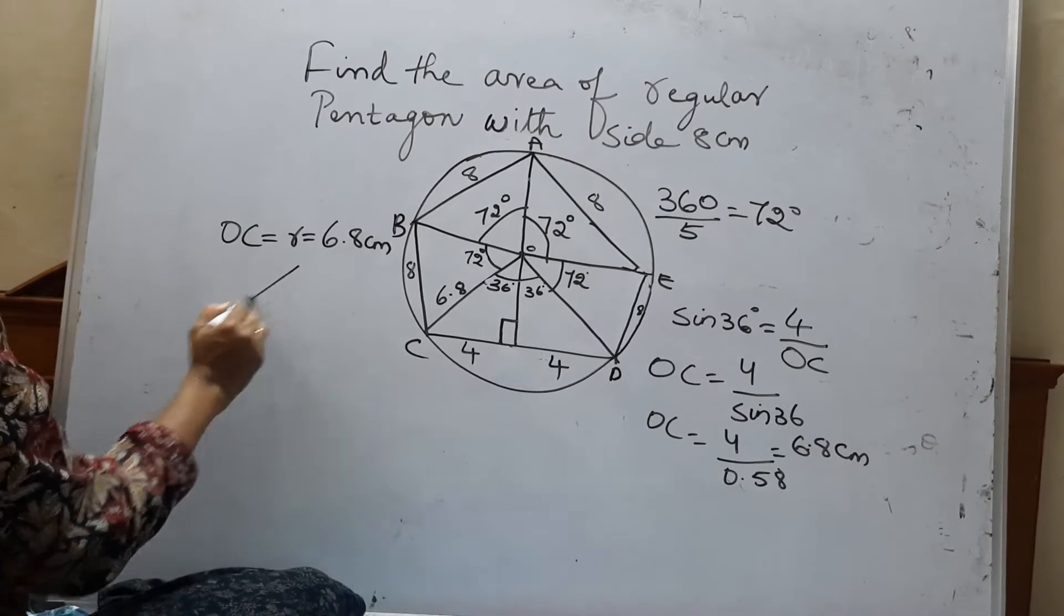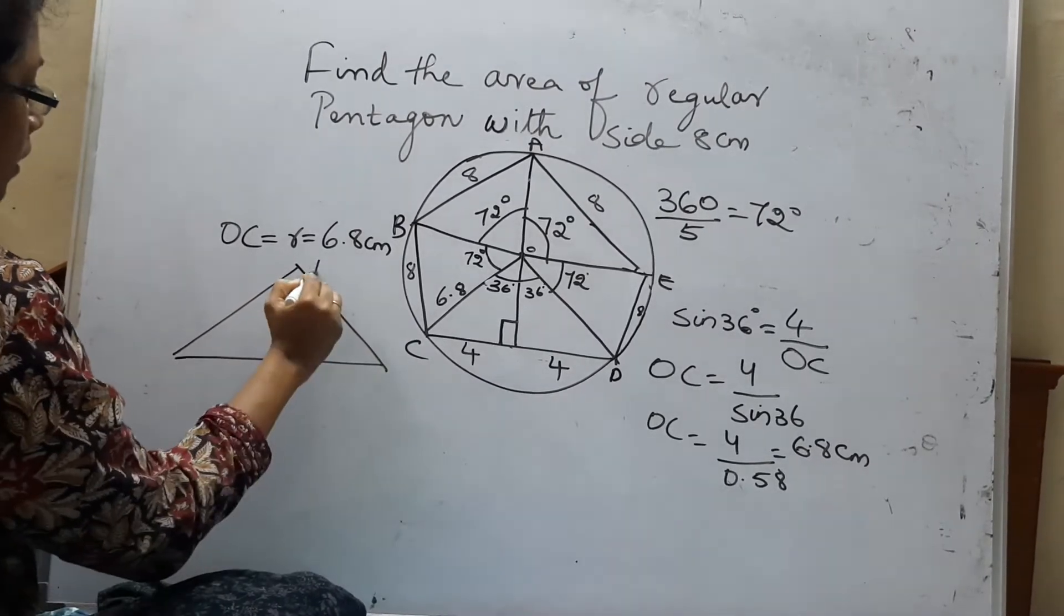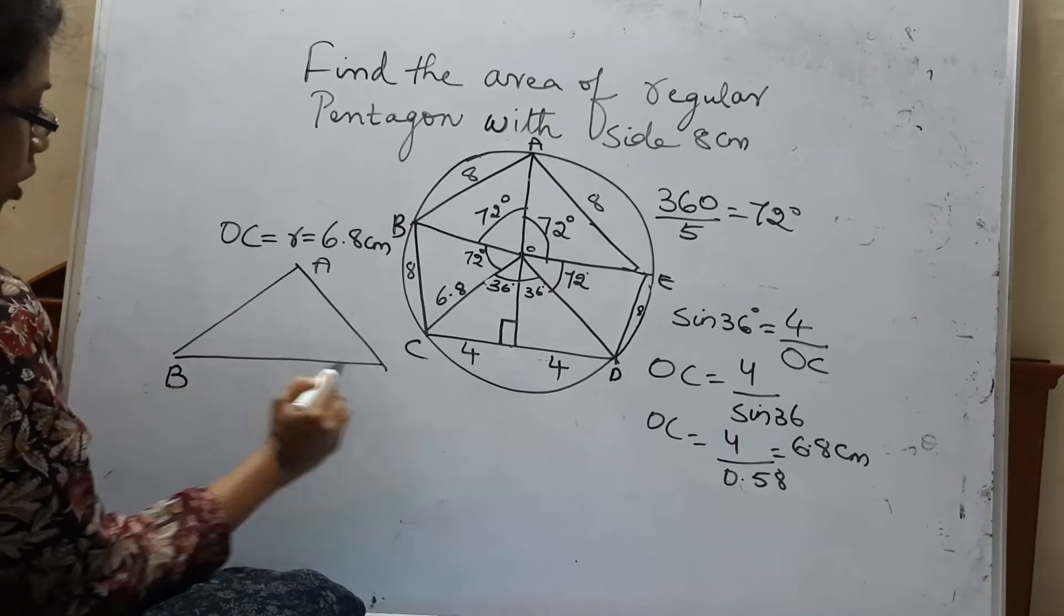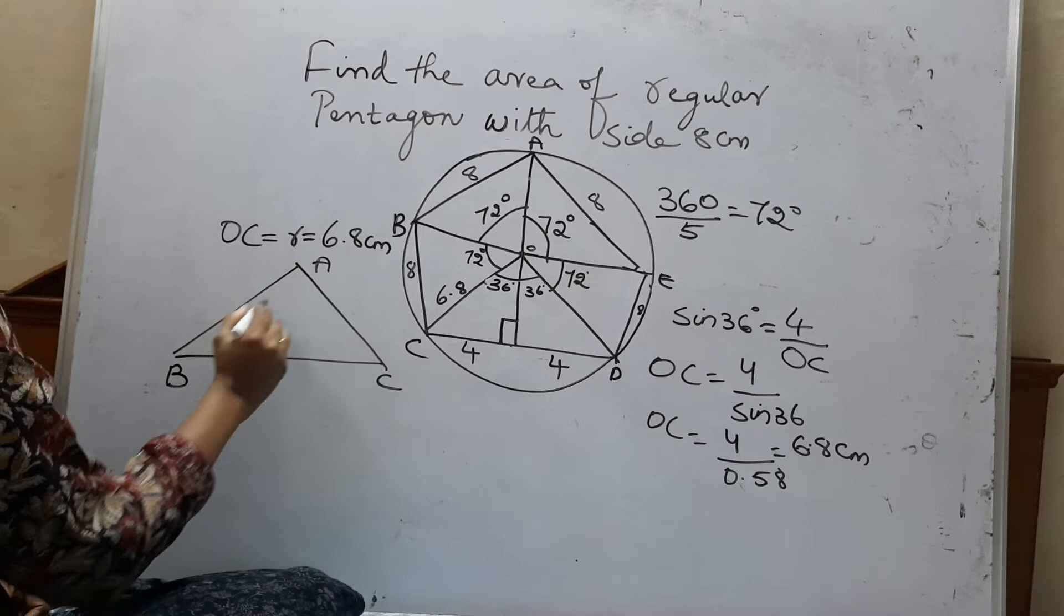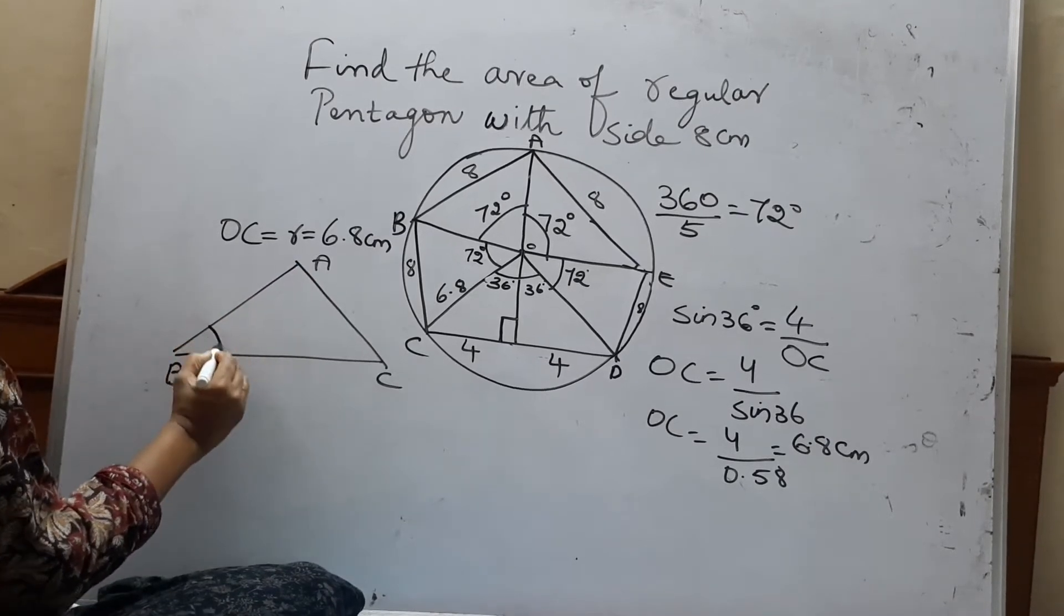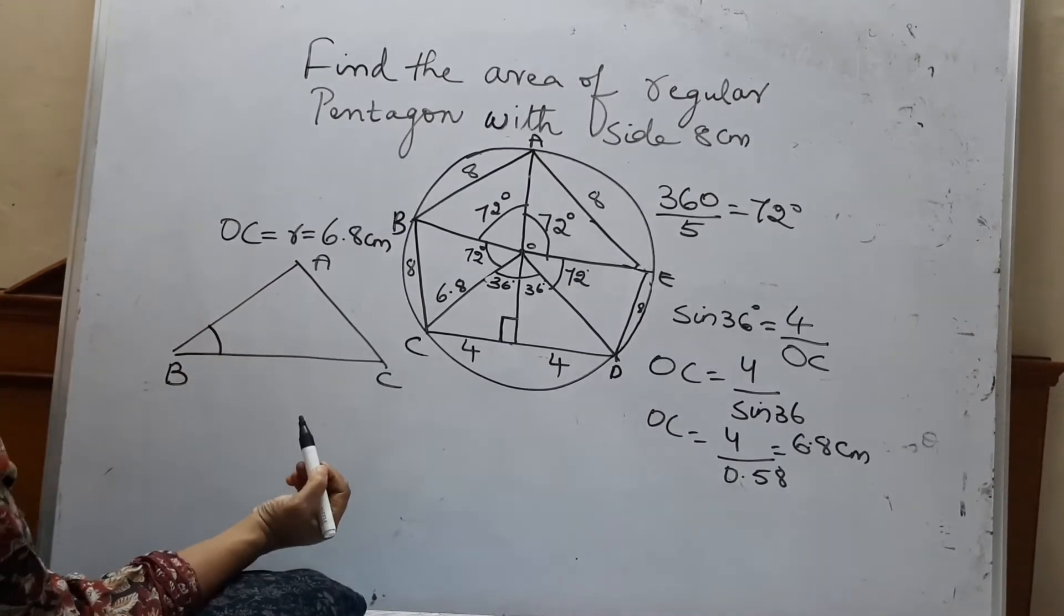Now, you know that this is a triangle. So how do you find out the area of the triangle? It is half into base into height. But when the included angle is given...